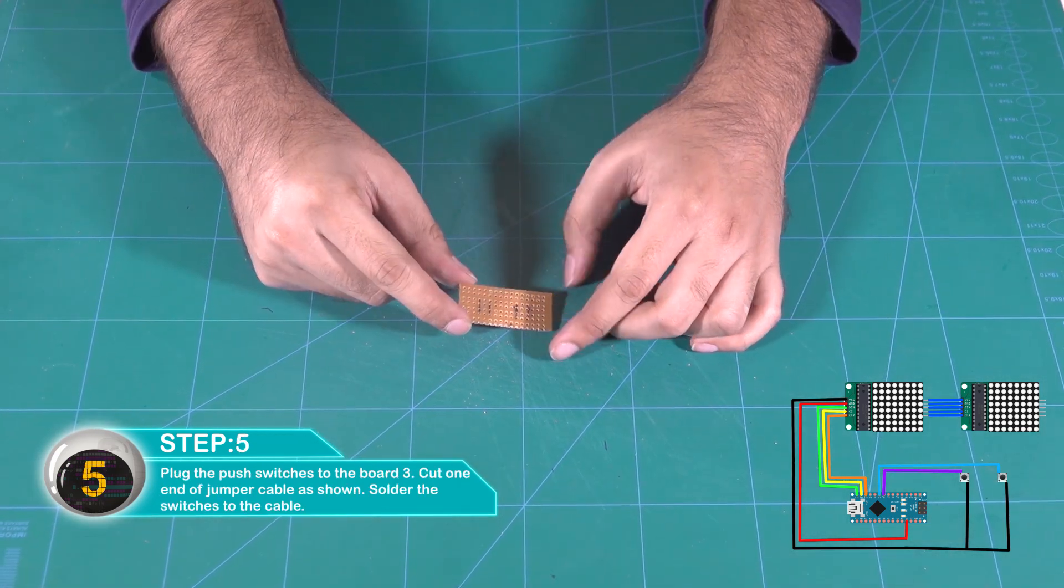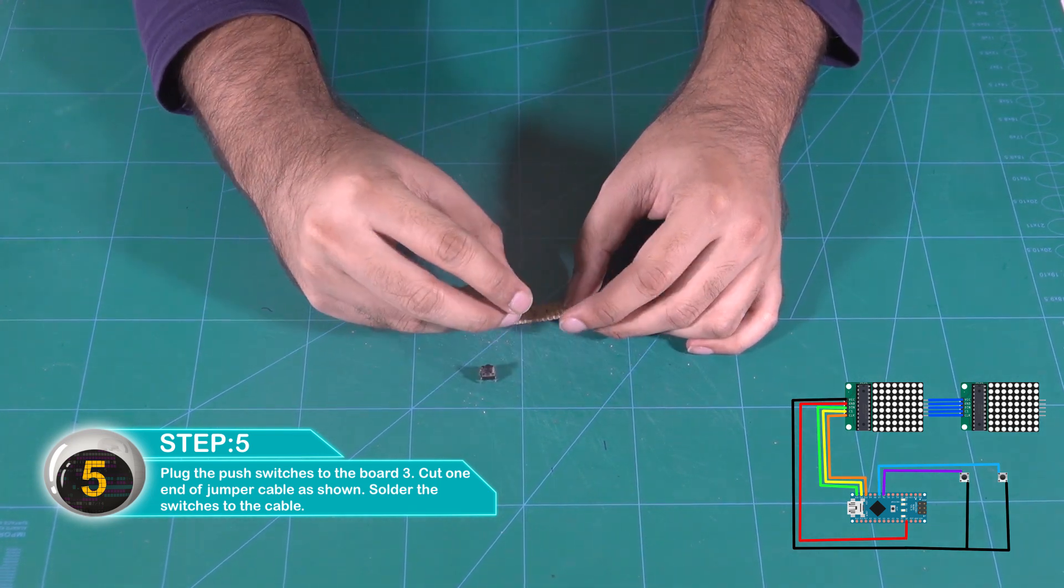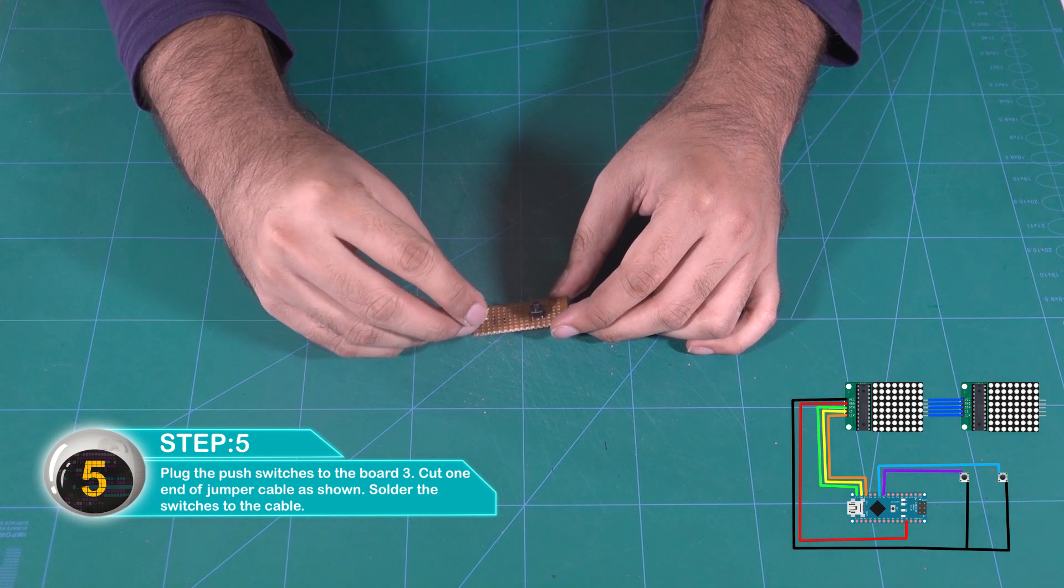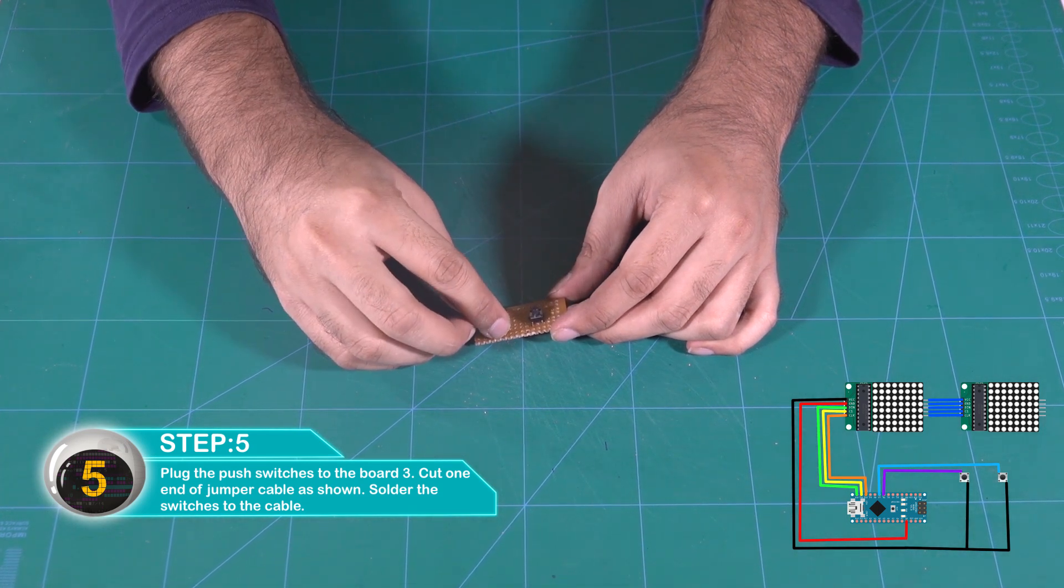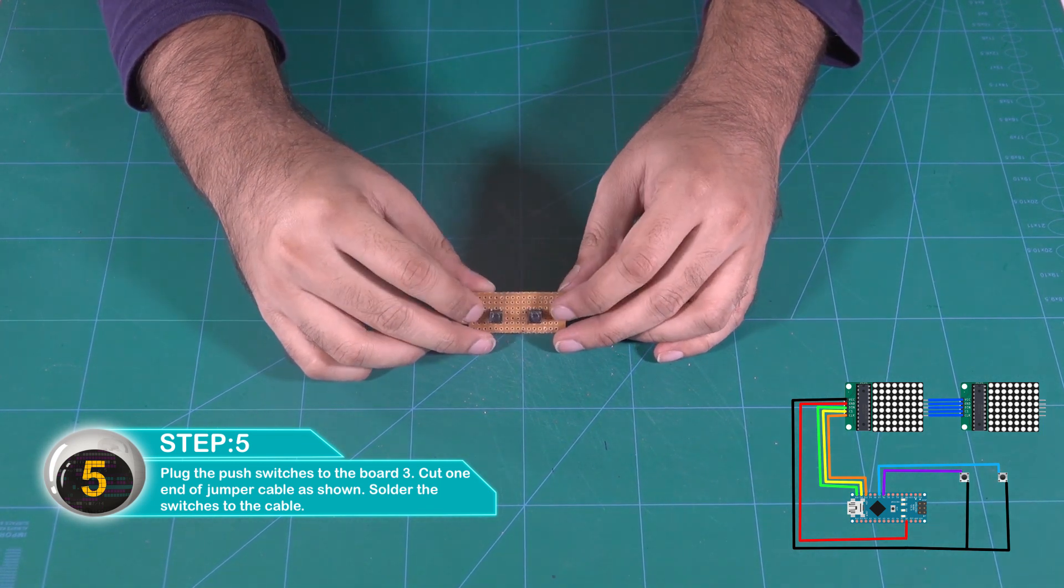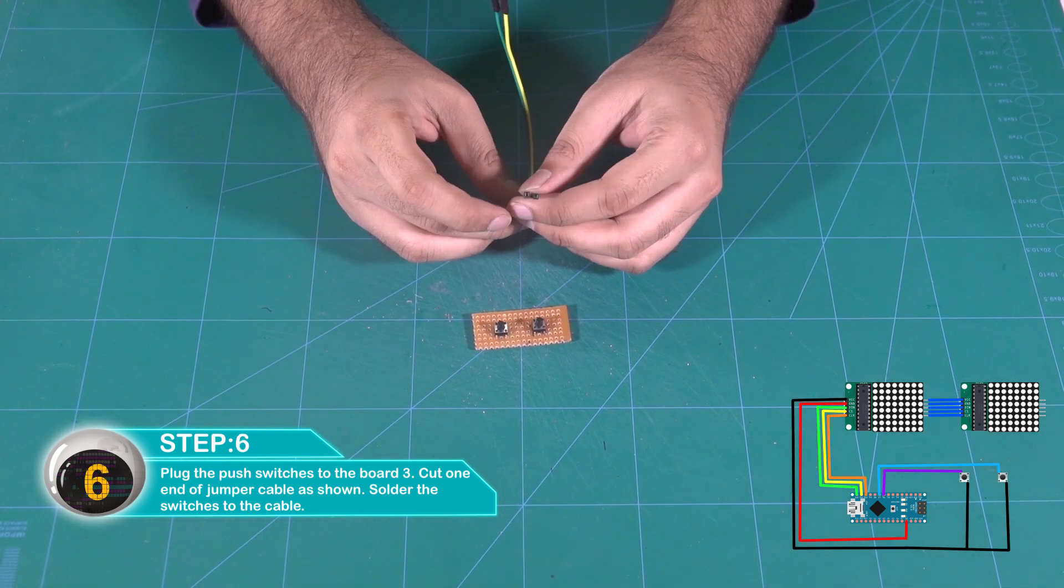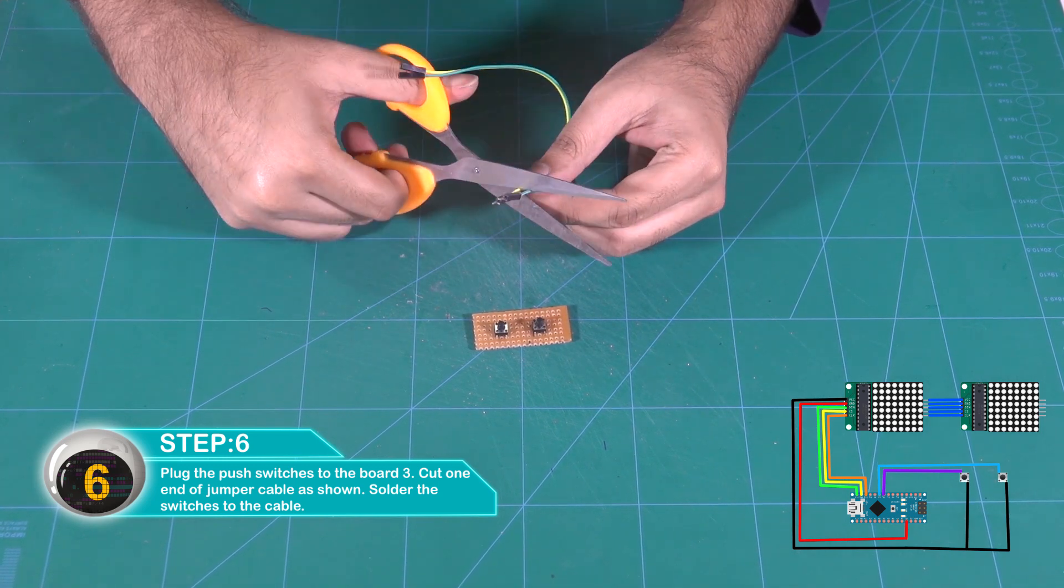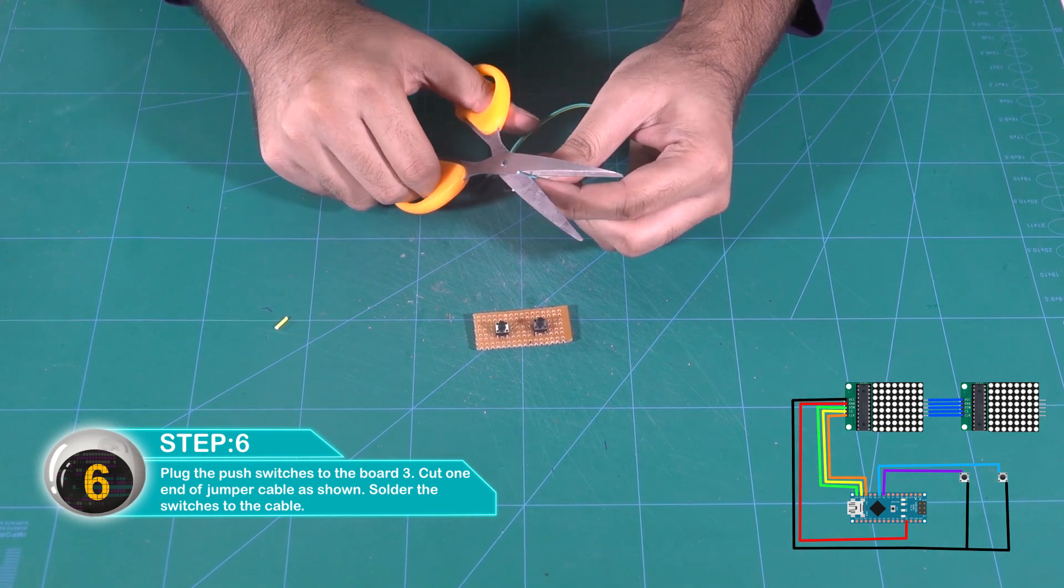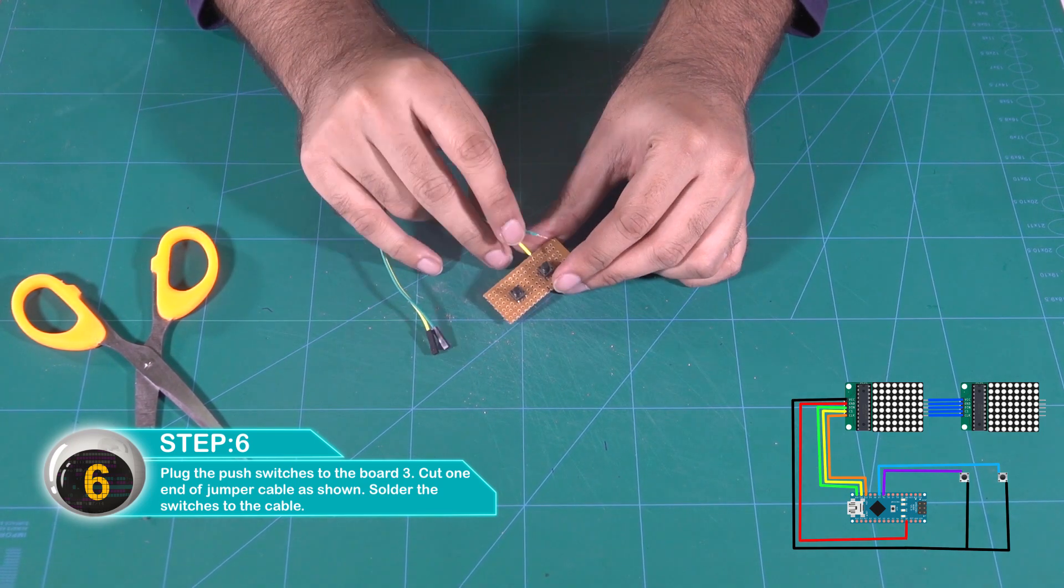Place the push switches on the proto board. Cut one end of the jumper cable as shown and solder the switches with the cables.